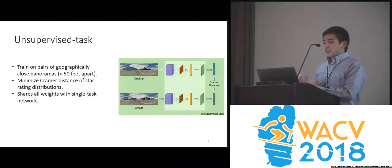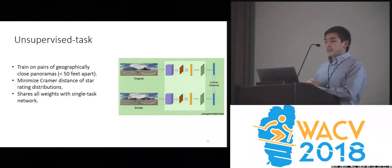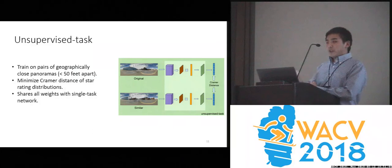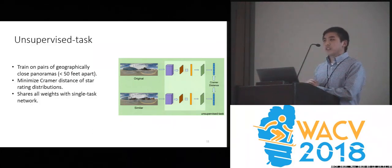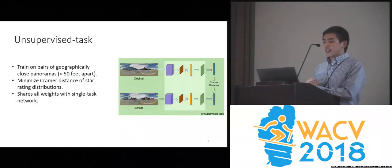For the unsupervised task, we train on pairs of geographically close panoramas that are within 50 feet apart from each other, and we minimize the Kramer distance of the star rating distribution. Since star ratings are valid for 100-meter segments of roads, pairs within 50 feet apart should have similar distributions. This unsupervised task shares all weights with the single task network.